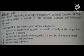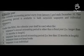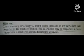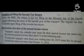Under the NIRC, the calendar year shall be used when: first, the taxpayer's annual accounting period is other than a fiscal year; second, the taxpayer has no annual accounting period; third, the taxpayer does not keep books; or fourth, the taxpayer is an individual. The fiscal accounting period is any 12-month period that ends on any day other than December 31, and it is available only to corporate income taxpayers. The deadline for filing the income tax return is the 15th day of the 4th month following the close of the taxable year.